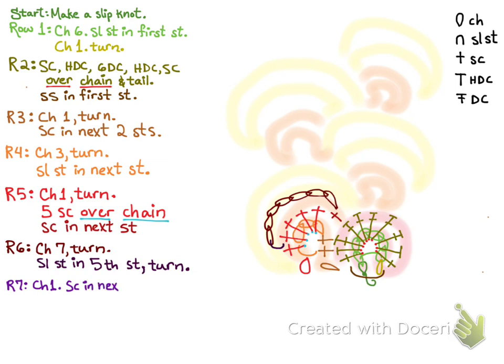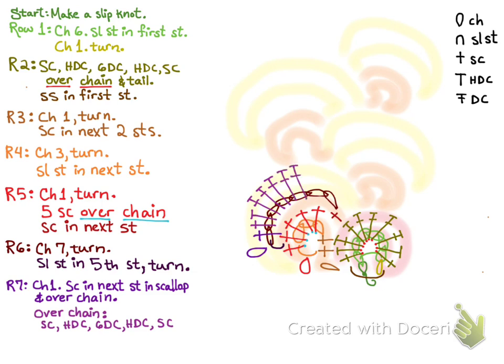For row seven, chain one and single crochet in the next stitch in the scallop and over the chain. And then over the chain you want a single crochet, half double crochet, six double crochet, half double crochet, and single crochet. Then slip stitch in the next stitch.